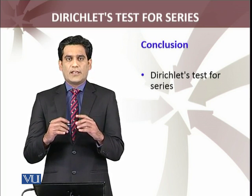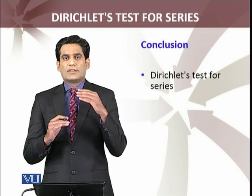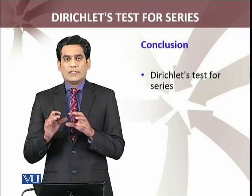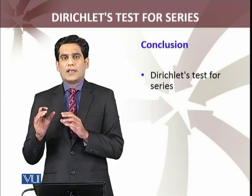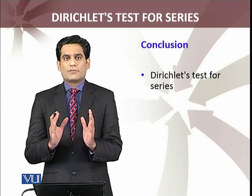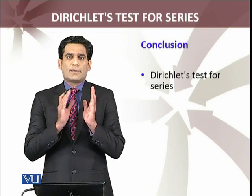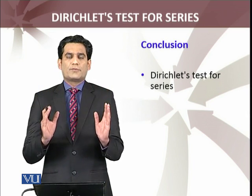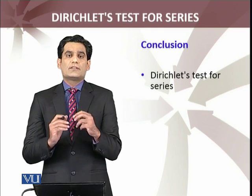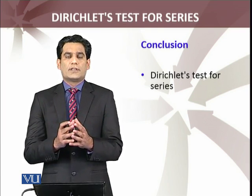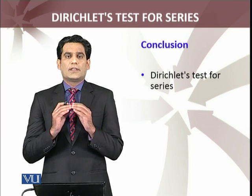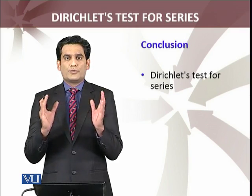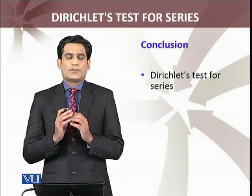In summary, the Dirichlet test has been proved using sequences of partial sums with the given conditions: limit as n → ∞ of aₙ = 0; the series of |aₙ₊₁ − aₙ| is absolutely convergent; and bₙ, the partial sums bk + bk+1 + ... + bₙ, have absolute value less than M, meaning the sequence Bₙ is bounded. Under these assumptions, we have proved that the series whose general term is a product of two terms is convergent.